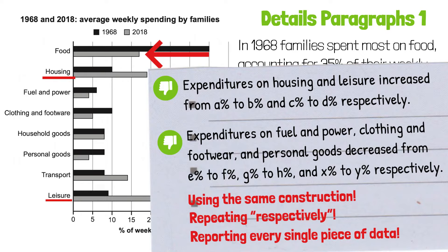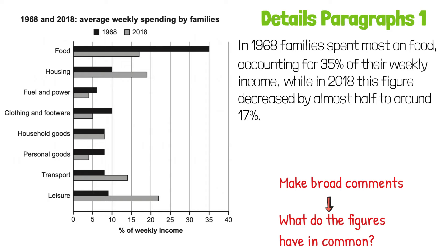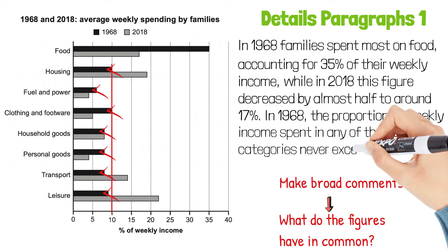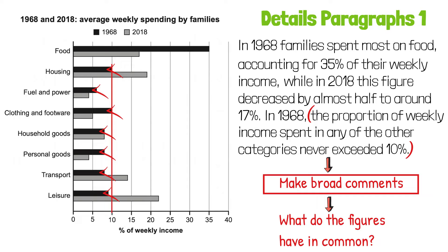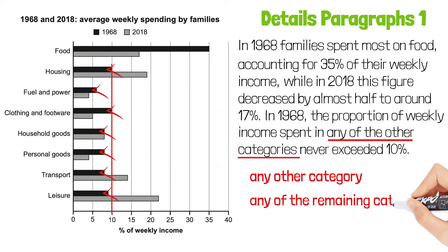To avoid reporting every single piece of data, we need to learn how to make broad comments. Ask yourself: what do these figures have in common? As you can see, in 1968, the percentages in the remaining categories are all lower than 10%. So we can say that in 1968, the proportion of weekly income spent in any of the other categories never exceeded 10%. This is the kind of broad comment we should make. But be careful — don't write 'the proportion of weekly income spent on the remaining categories never exceeded 10%,' because this may be read as the remaining categories together accounting for 10% or less. We can remove this ambiguity by using 'any of the other categories,' 'any other category,' or 'any of the remaining categories.' All three versions are clear.